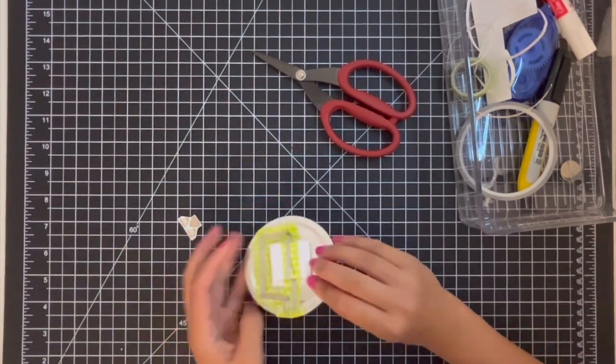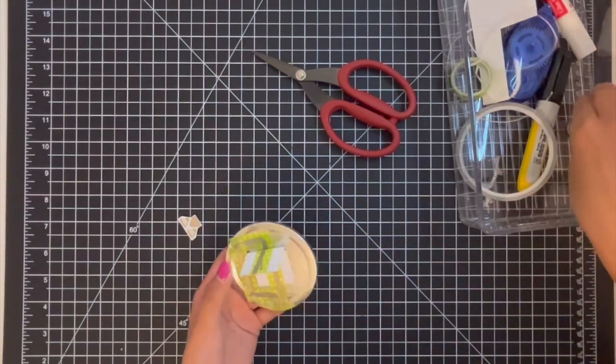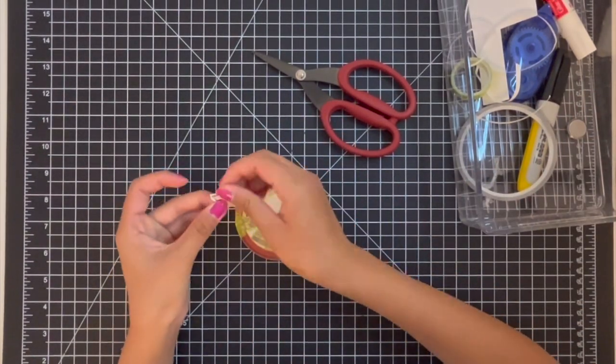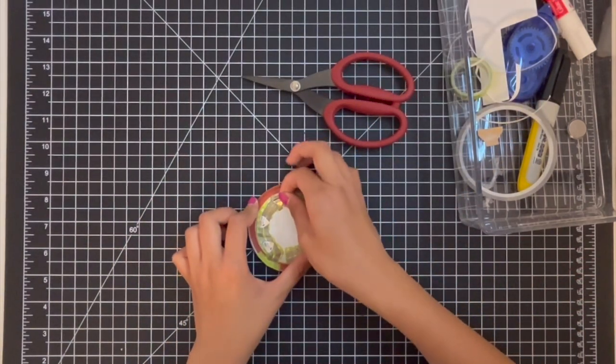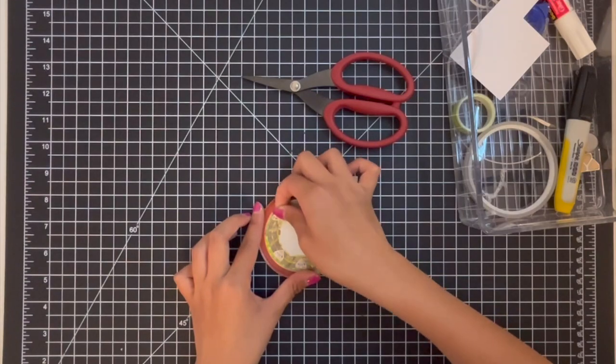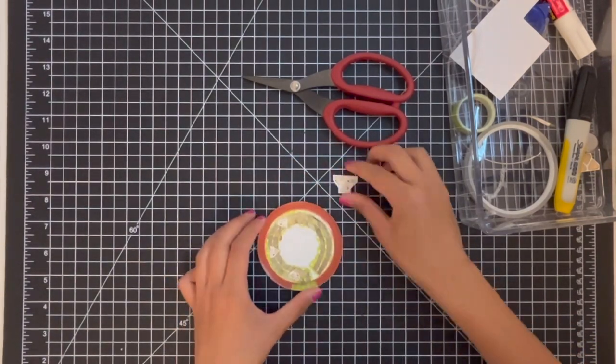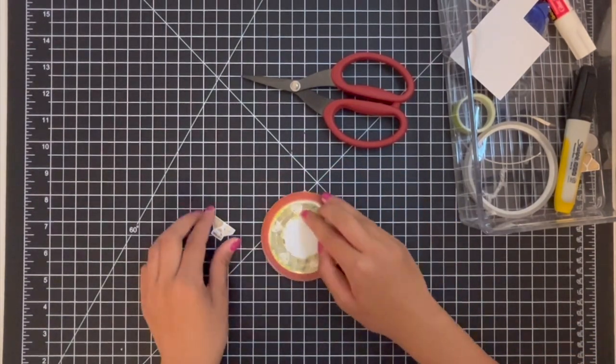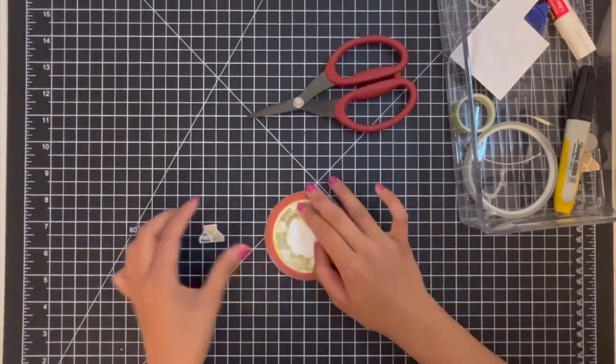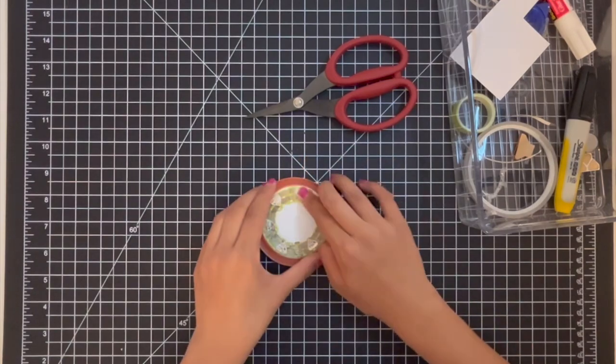Depending on how large your cap is and how bright you want your mason jar to be, you can use anywhere between two to seven LED stickers. I'm going to be using six in my example today. I'm trying my best to space them out evenly, making sure that the negative side of the light, which is the pointy side, matches up with the negative line of the copper tape, and the positive side of the light, which is the flat side, matches up with the positive line of copper tape.